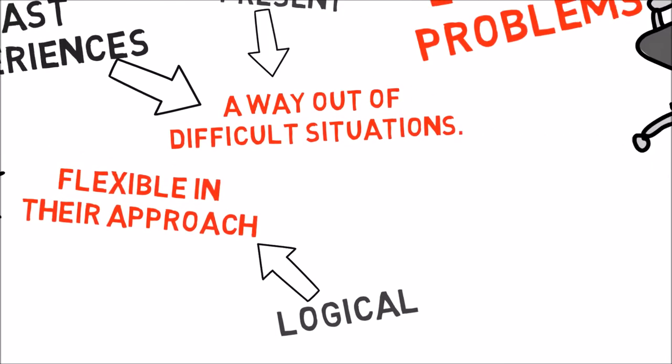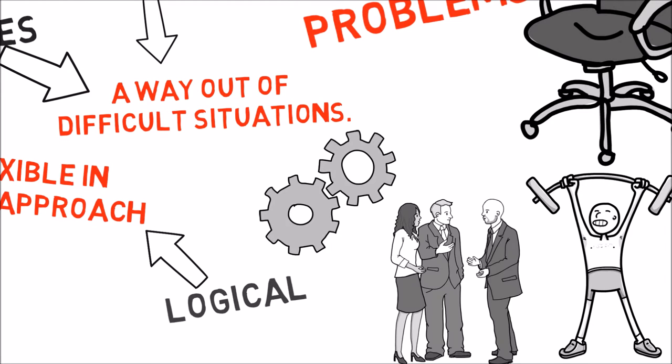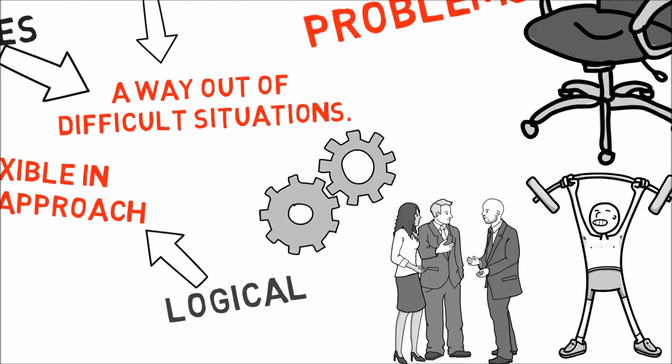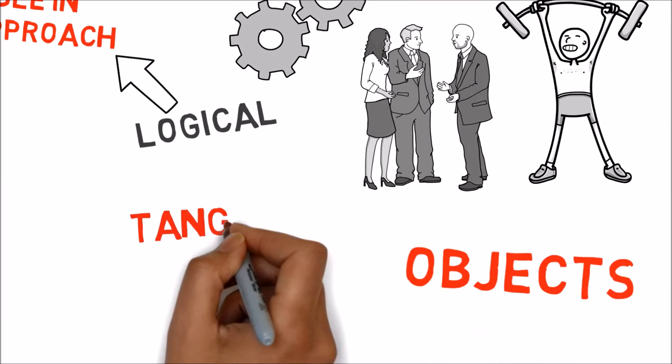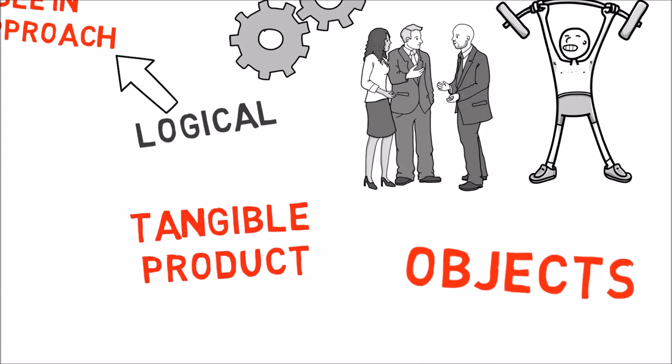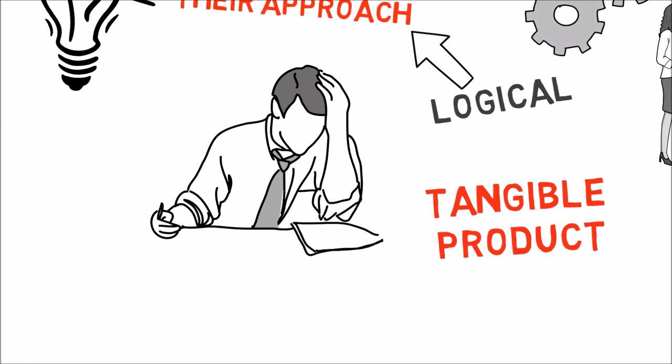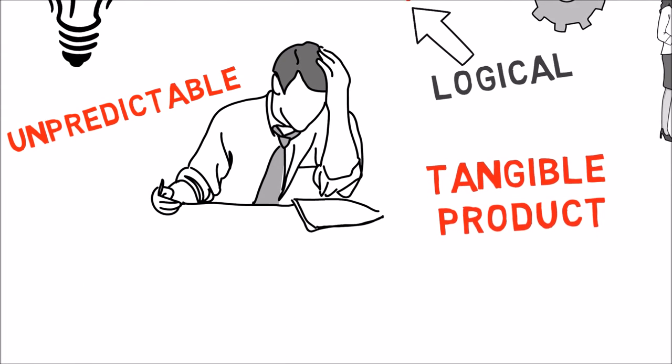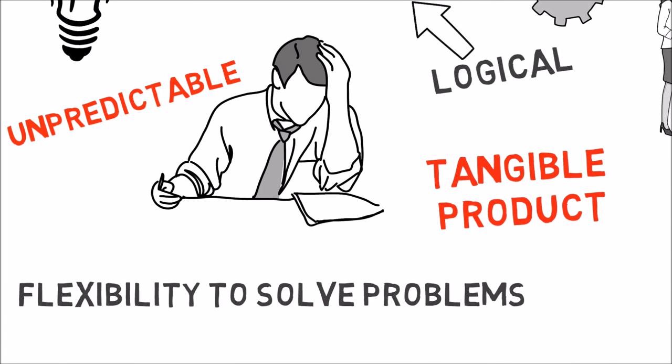ESTPs often choose careers that take advantage of their athleticism, their mechanical skills, or their ability to negotiate their physical surroundings. They tend to prefer objects to ideas and often like a tangible product. They may have trouble sitting still and often avoid being stuck behind a desk. ESTPs like a job that is a bit unpredictable and offers them some fun and adventure throughout the workday. They want a job which allows them plenty of flexibility to solve problems on the spot without pressure to follow set procedures or plans.